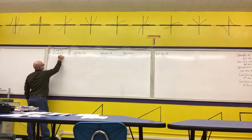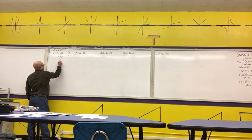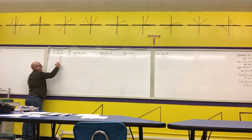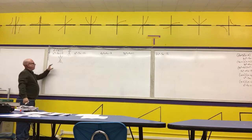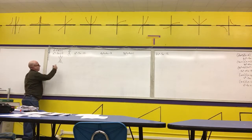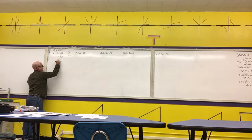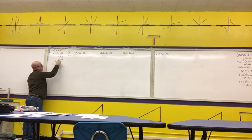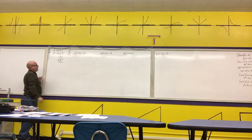We want two numbers that add to negative 8 and when multiplied give positive 12. You should be able to immediately look at this — you need to be very comfortable with your multiplication tables. The answer is negative 6 and negative 2. Check: negative 6 times negative 2 is positive 12, and negative 6 minus 2 is negative 8.